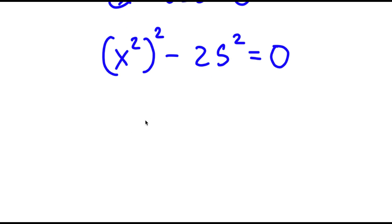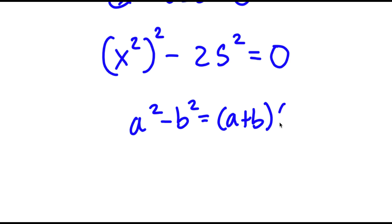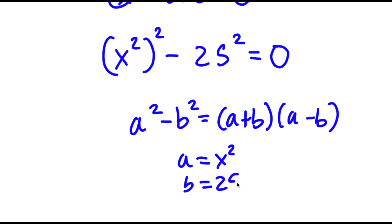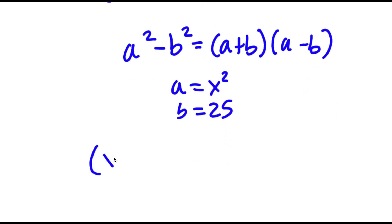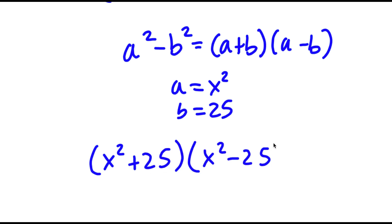Now, if I have something in the form a squared minus b squared, this is equal to a plus b times a minus b. So in this case, a is x squared and b is 25. So I have x squared plus 25 times x squared minus 25 is equal to 0.